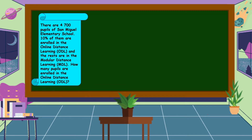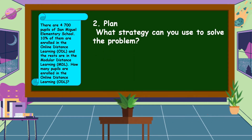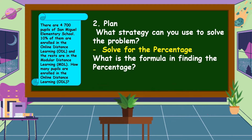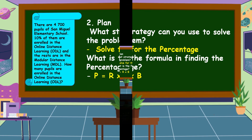After we understand the problem and know what is asked and what are the given facts, next we're going to formulate a plan. What strategy can you use to solve the problem? In this problem, we're going to solve for the percentage. The formula in finding the percentage is: percentage is equal to rate times base.